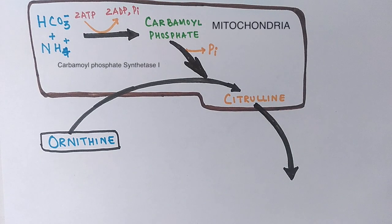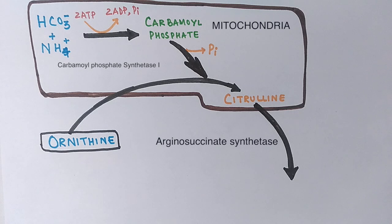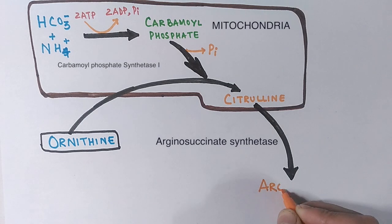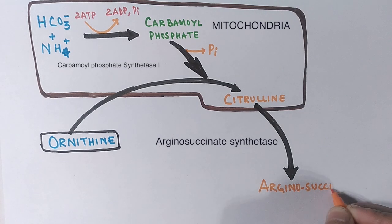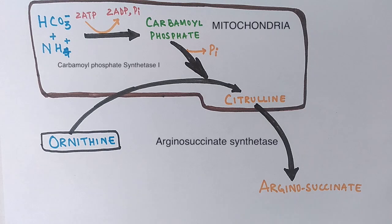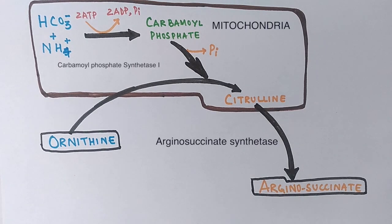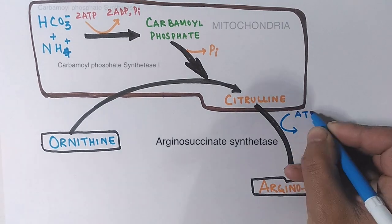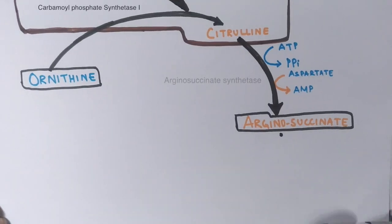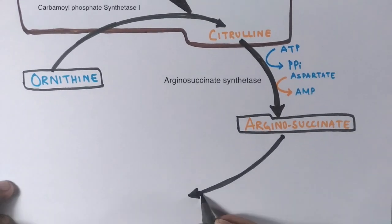In the cytosol, citrulline reacts with aspartate in the presence of the enzyme argininosuccinate synthetase. ATP is utilized in this reaction, making it irreversible as well, and the product formed is argininosuccinate.